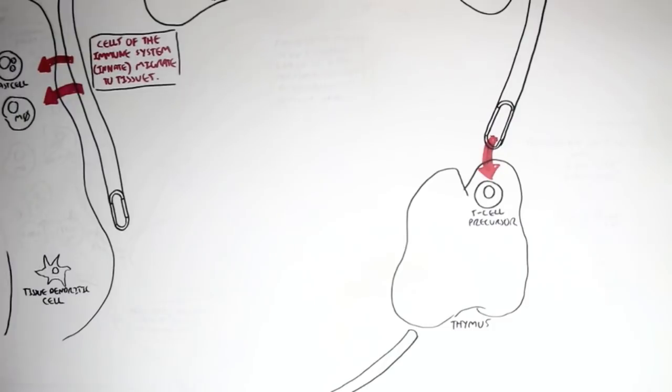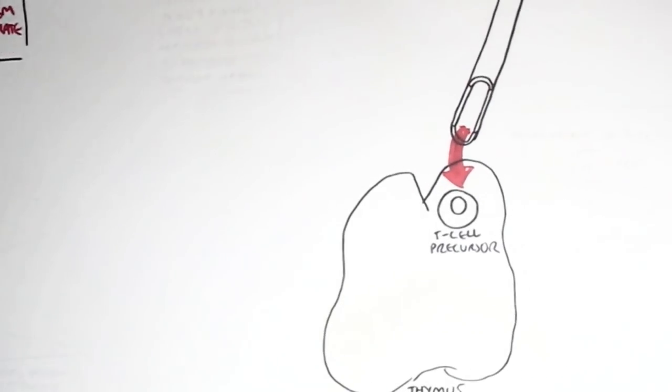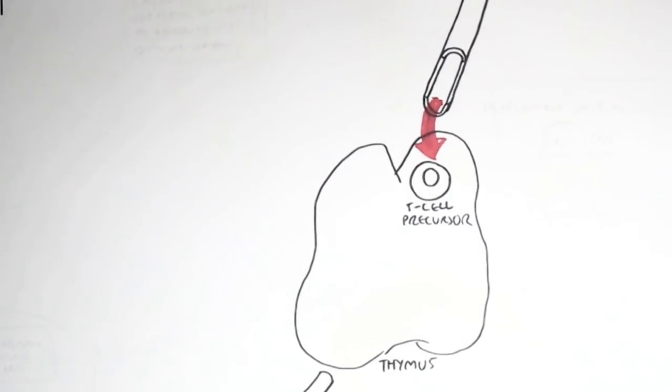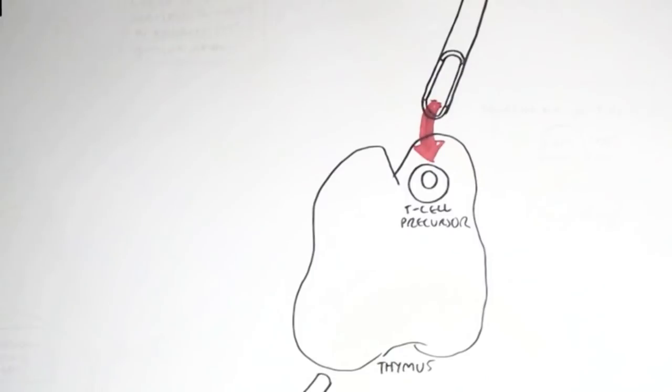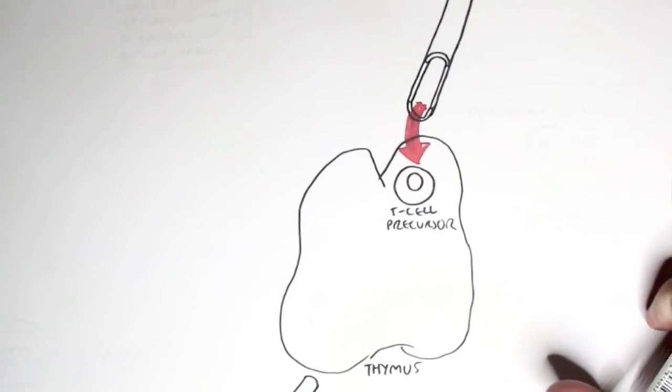So in this video, we'll actually see what happens to this T cell precursor. Of course, because this is a T cell precursor, it will obviously become a T cell. However, we looked at the lymphoid precursor when it entered the thymus. And so this lymphoid precursor can be programmed.